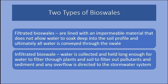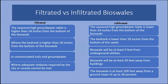Infiltrated bioswales collect water and hold it long enough for the water to filter through plants and soil, removing pollutants and sediment, and then any overflow is piped into the stormwater system. This type — the infiltrated bioswale — is perfect for a home landscape. You would install a filtrated bioswale if the groundwater table is very high, if you have contaminated soil, or if you cannot make the required setbacks mandated by city or county.